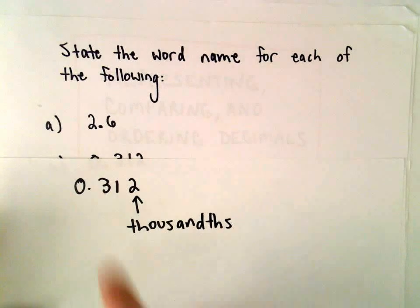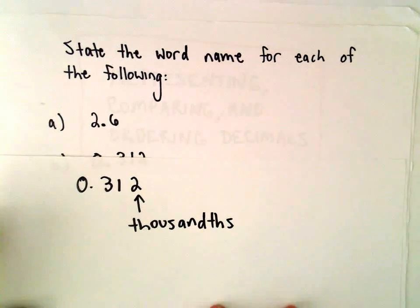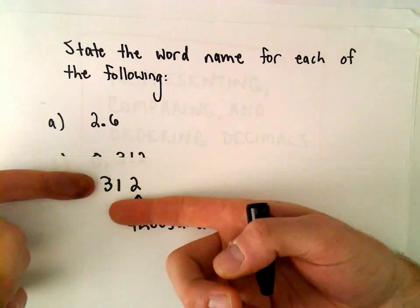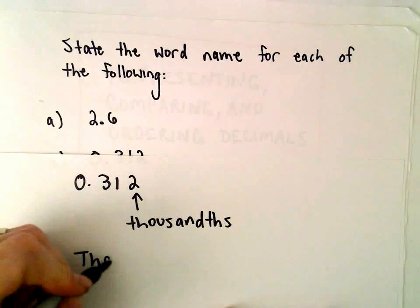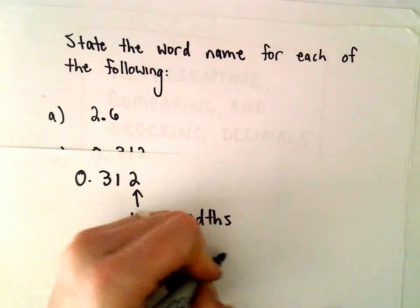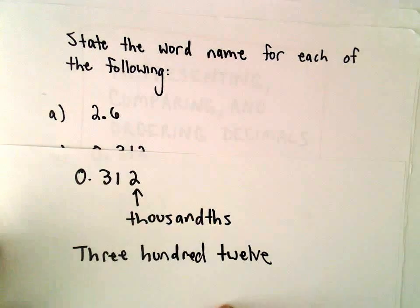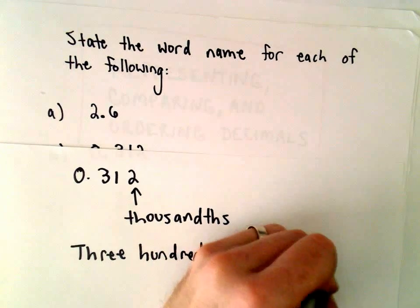So our very last digit is in the thousandths place. It's kind of hard to say. So if you think about it without the decimal and everything else, you could say okay, this is really 312, but then you just tack on the thousandths part.